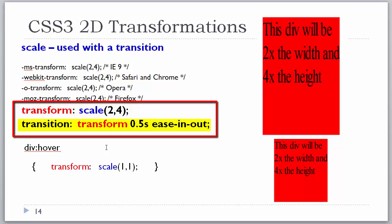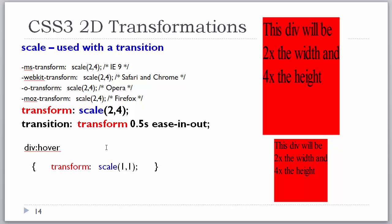So in the CSS for the object, we have transform: scale(2, 4), meaning it is scaled when the page opens. We also have a transition property applied, and its value is the transform CSS property. So when the hover occurs, we manipulate the transform property over half a second using the ease-in-out timing function. In the hover section we have transform: scale(1, 1), so on the hover we are scaling it back to its original size. You can see the two screenshots for before and after, though you can't see the actual transition in a static slide.